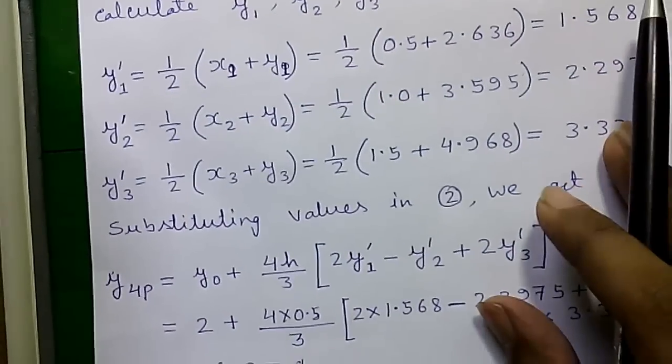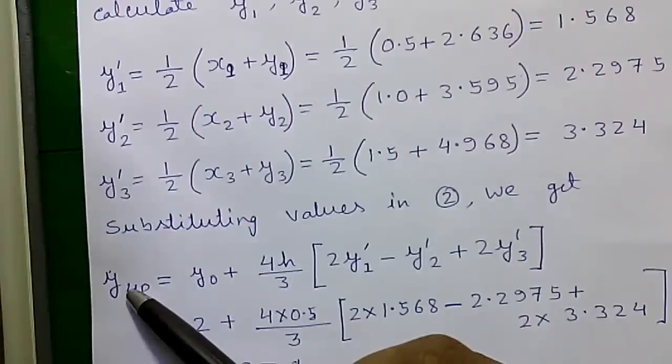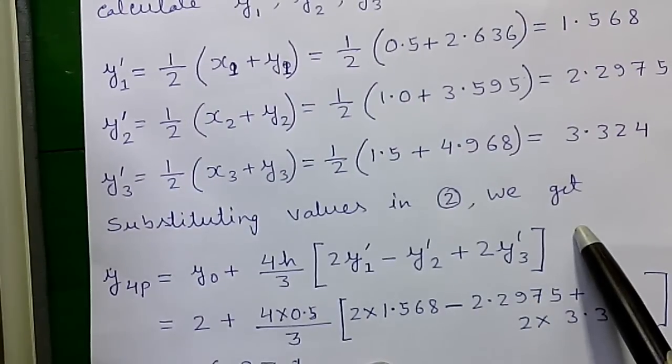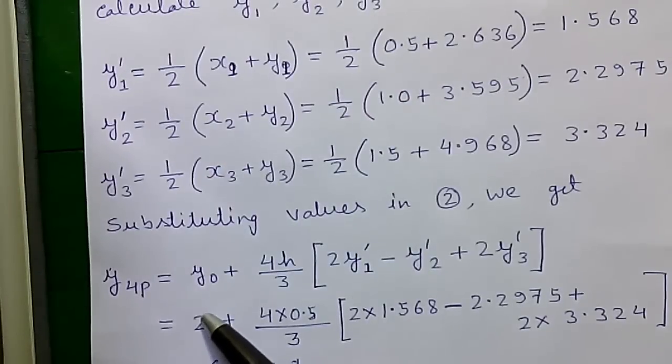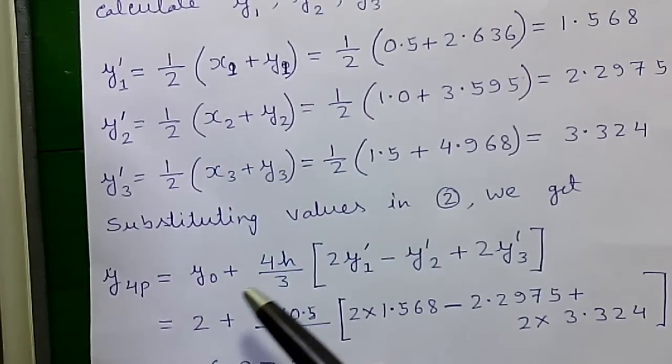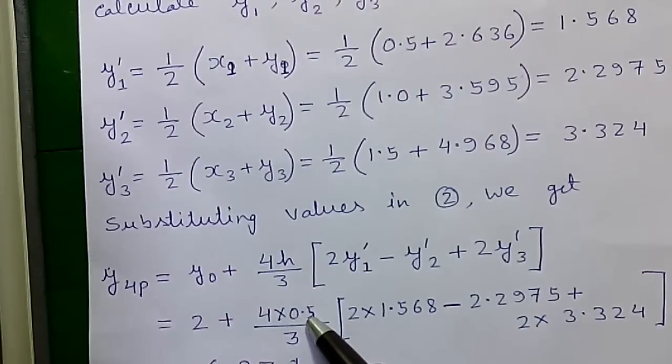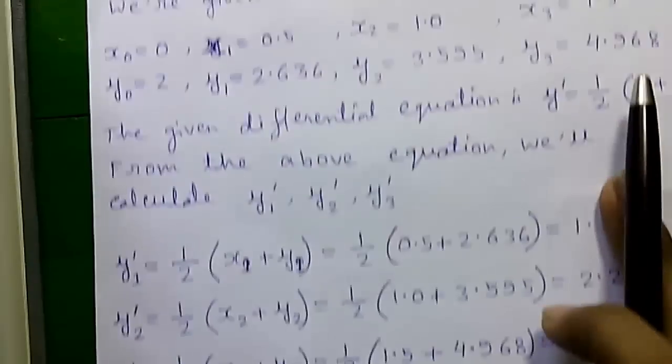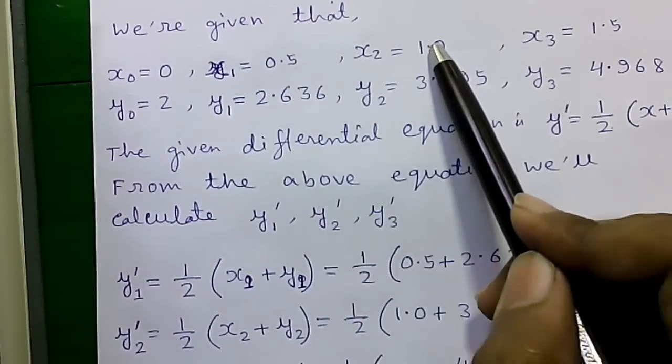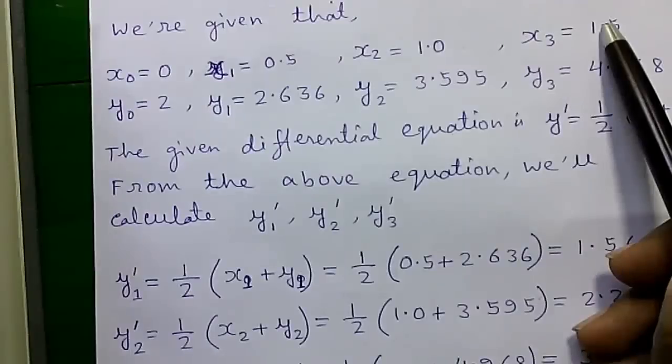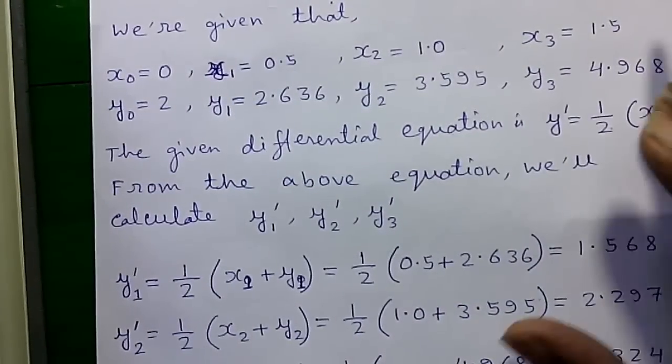Now by substituting values in formula number 2 we will get the formula and we will put the values. y(0) is our first value of y that is 2 plus 4 times h. Here h is the increment in the value of x. Increment is from 0, 0.5, 1.0, 1.5. You can see the increment is by 0.5. So h equals 0.5.